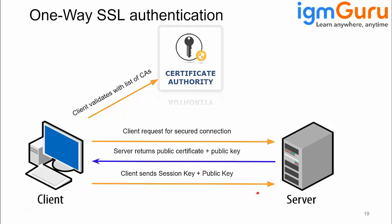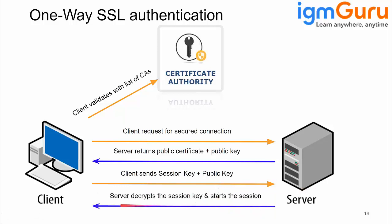Once both parties have the session key, from that point onward both parties communicate using the same key. One party encrypts with the session key, the other decrypts with the session key — and vice versa. So data communication, when we are talking about REST API or HTTP, happens in two phases: first the handshake, then data transfer. Data transfer happens via the session key only.